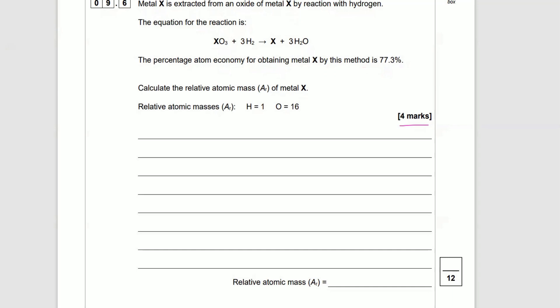The percentage atom economy for obtaining metal X by this method is 77.3%. Calculate the relative atomic mass of metal X. Relative atomic mass: hydrogen is 1, oxygen is 16.